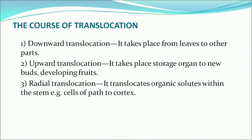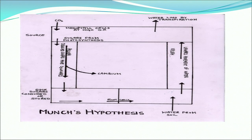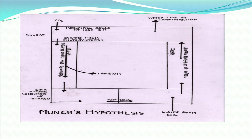Radial translocation translocates organic solutes within the stem — from the pith to the cortex. Here is an illustration showing how root cells absorb water from the soil and allow it through xylem to the upper parts of the plant. Along with the water current, minerals get transported to the leaves. In leaves the food gets prepared and by the phloem sieve tubes the food gets transported to different parts of the plant — there is also a downward movement shown and another arrow showing how organic solutes are transported to the cambium.